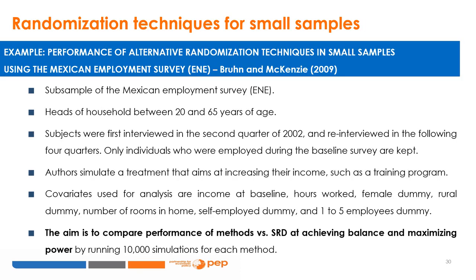We will now look at an example illustrating the performance of alternative randomization techniques in small samples using the Mexican Employment Survey, or ENE, from a 2009 paper by Bruin and Mackenzie. The different randomization techniques are tested on a subsample of Mexican heads of households between 20 and 65 years of age, first interviewed in the second quarter of 2002 and re-interviewed in the following four quarters. Only individuals employed during the baseline survey were kept.